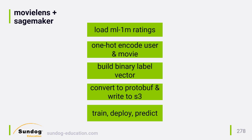Once our training and test data are in the expected format and in the expected place, the rest is relatively simple. We tell SageMaker to spin up some hardware to train our factorization machine model, deploy the trained model into production, and then we can query it for specific predictions for given user-movie combinations. Let's have a look at the code.